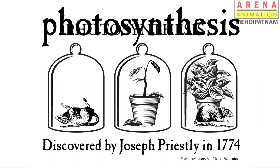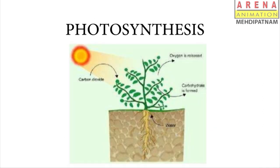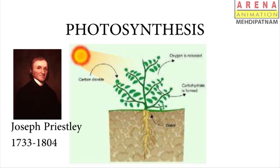Photosynthesis is a process used by plants and other organisms to convert light energy, normally from the sun, into chemical energy that can be later released to fuel the organism's activities. We are going to discuss the role of air in photosynthesis through the Priestley experiment.